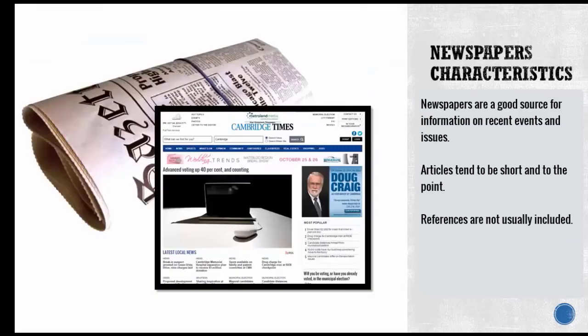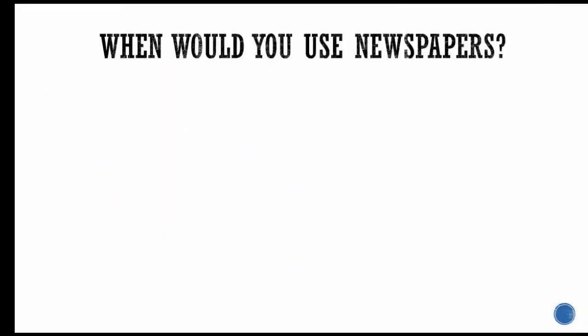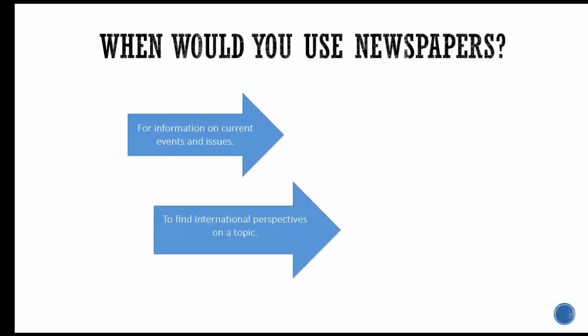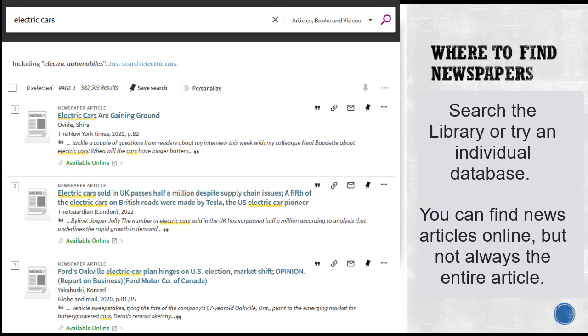What about the characteristics of newspapers? Newspapers are a good source of information on recent events and issues. Articles tend to be short and to the point. References are not usually included. Typically, you'd use newspapers to find information on current events and issues, international perspectives on a topic, or local information. You can find newspapers using the search box on the library's homepage, or by searching a specific database.